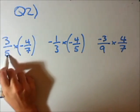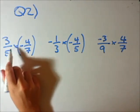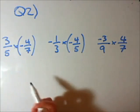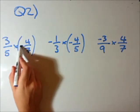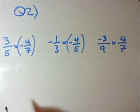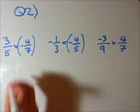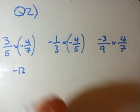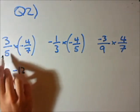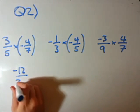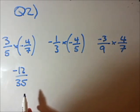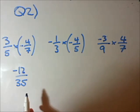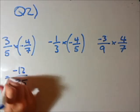So we have this fraction being multiplied — we can just multiply the top. 3 times negative 4: well, 3 times 4 is 12, so put a negative sign there. And 5 times 7 is 35. Now that is in its lowest form — 3 doesn't go in evenly — so our answer is negative 12 over 35.